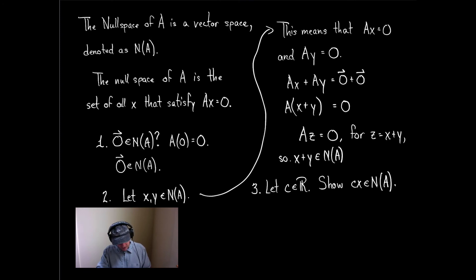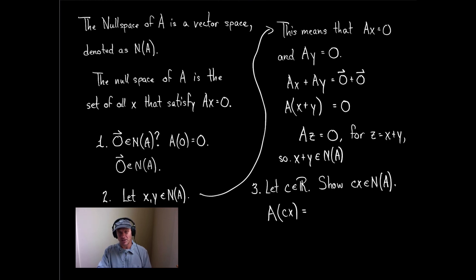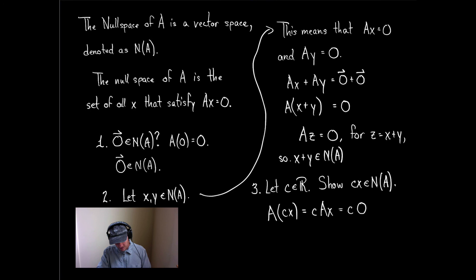Let's try. A times the vector cx — we can factor out that scalar, because whether we multiply the scalar before or after the matrix multiplication, it's the same. So A(cx) = c(Ax). But we already know x is in the null space, so Ax = 0. Therefore c(Ax) = c times the zero vector, which is still the zero vector. Thus cx is in the null space of A.